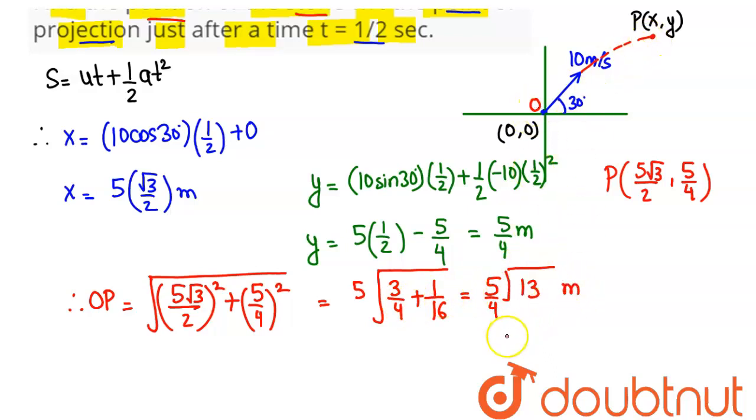Hence this point is at a distance of 5 root 13 by 4 meter, which is our final answer.